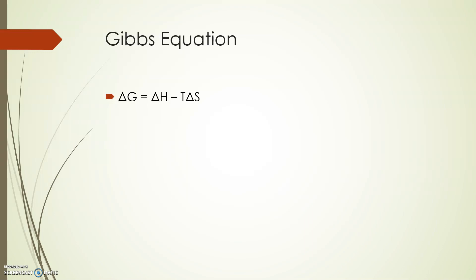The Gibbs equation is simply delta G equals delta H minus T delta S. Let's break down the Gibbs equation into different components. First, we have the left-hand side, delta G.